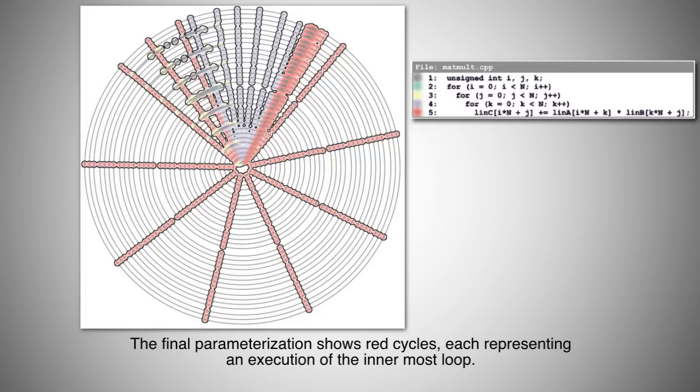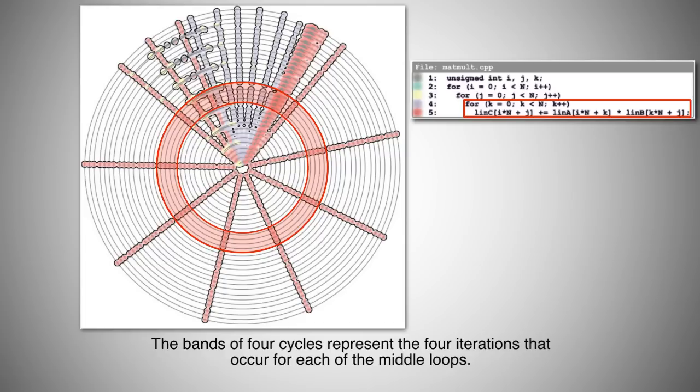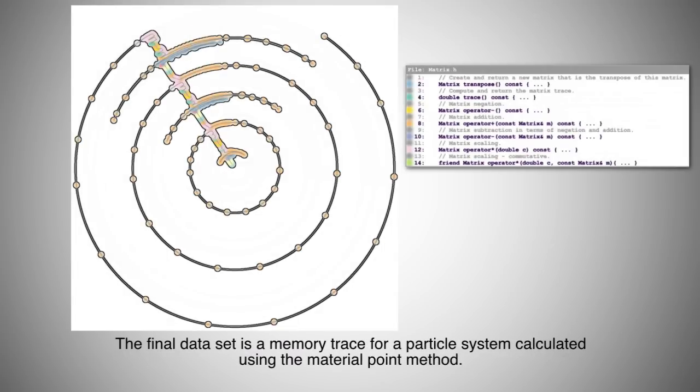The final parameterization shows red cycles, each representing an execution of the innermost loop. The bands of four cycles represent four iterations that occur for each of the middle loops.